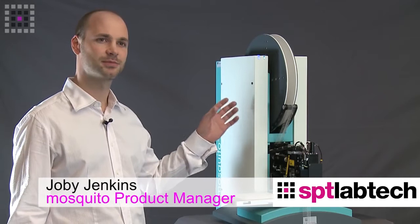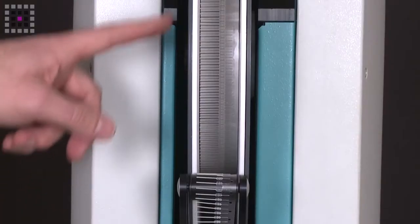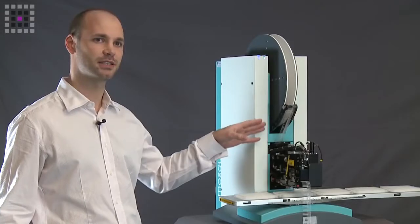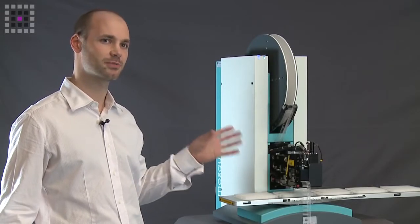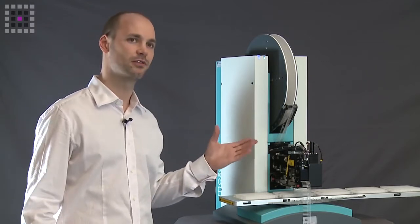This is Mosquito, a disposable tip low-volume liquid handling instrument. It contains a spool of disposable positive displacement pipette tips which are used to make aspirations and dispense pipetting movements in low volumes.